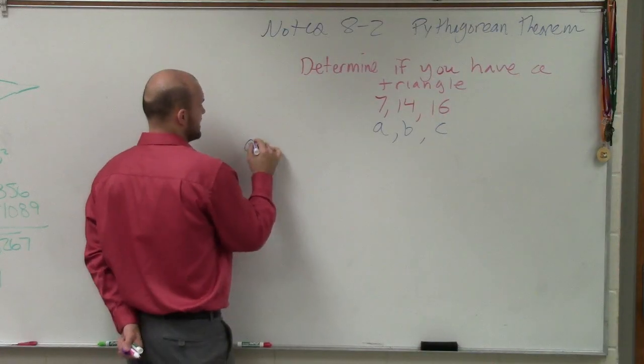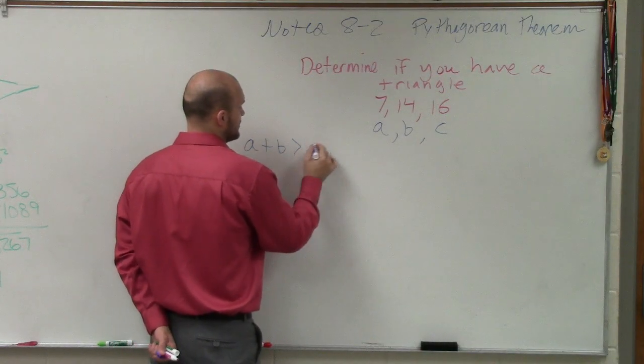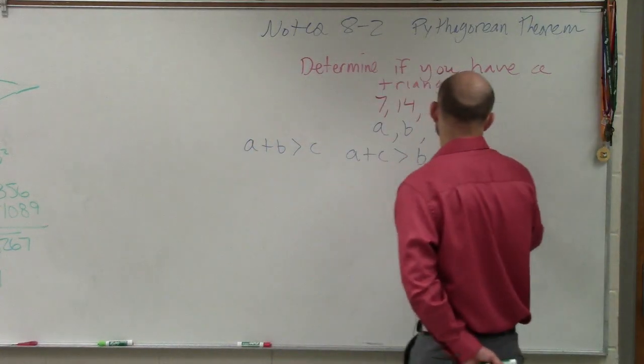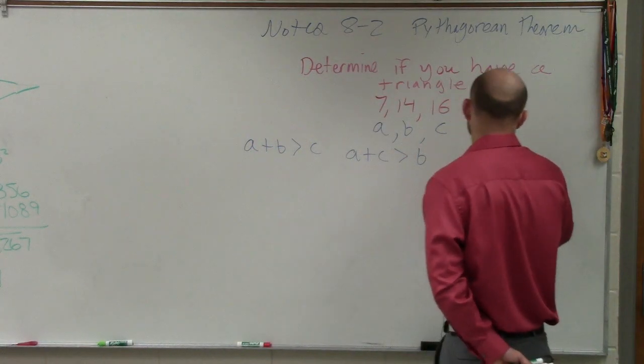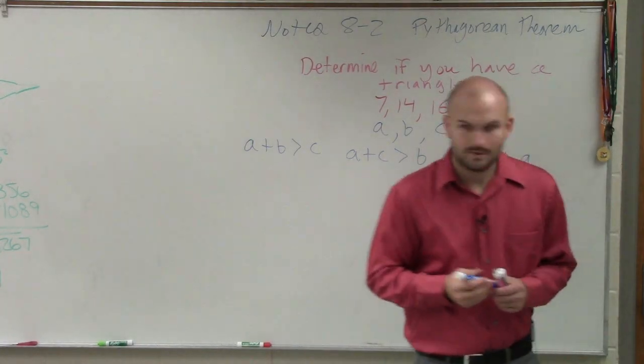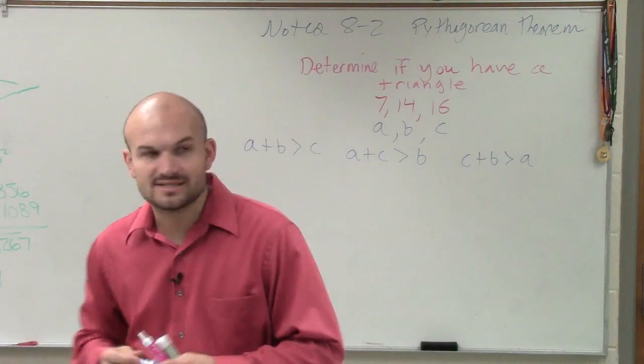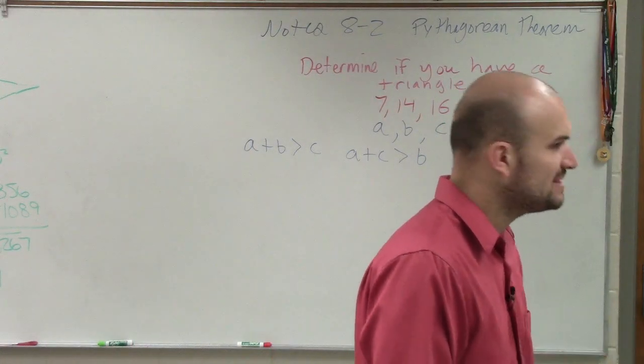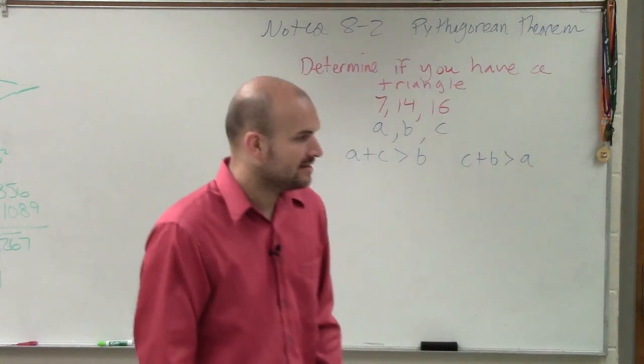What that means is a plus b has to be greater than c. a plus c has to be greater than b. And c plus b has to be greater than a. And what that's telling you is the sum of any two sides of a triangle have to be larger than the third side.